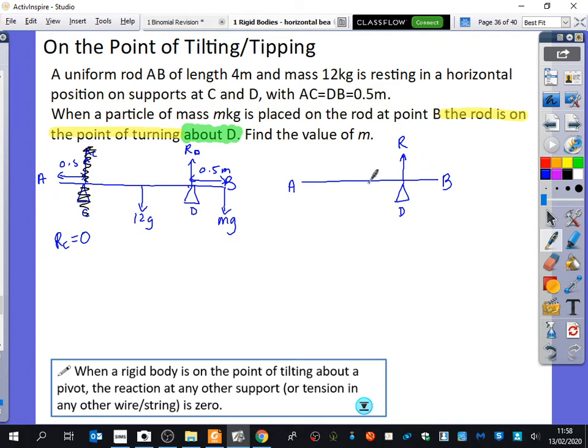I've still got 12G because it's uniform, and I've still got MG here. This distance is 0.5. The whole thing is 4 meters. So what's it from here to here? 1.5. So this little extra bit of the rod now doesn't really do anything.